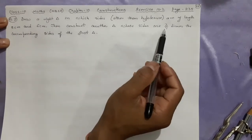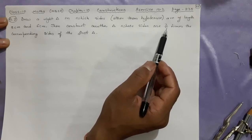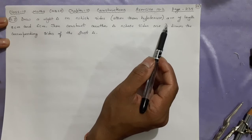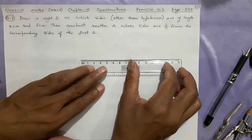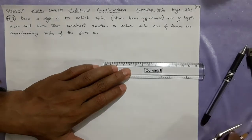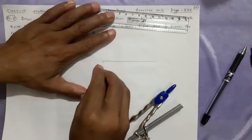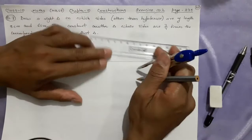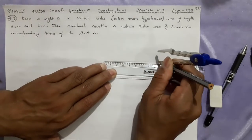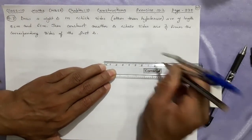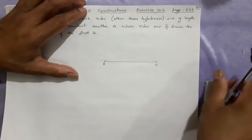The difference from the previous question is that the ratio is three by four, meaning the new triangle formed will be smaller — the smaller triangle. The original triangle will be bigger because the numerator is smaller than the denominator. Let's start by first drawing one side. One side will be eight centimeters; draw it with a scale. BC equals eight centimeters — drawn.